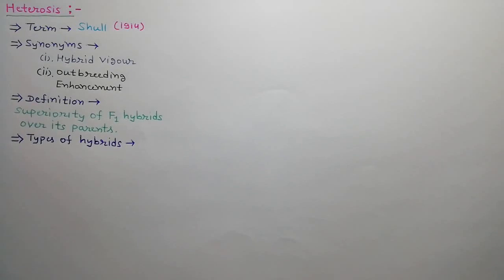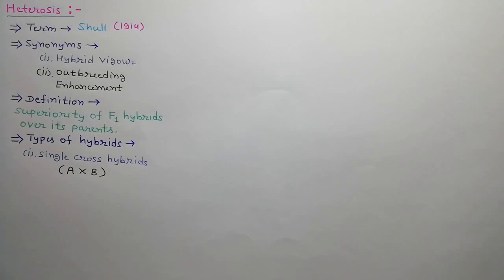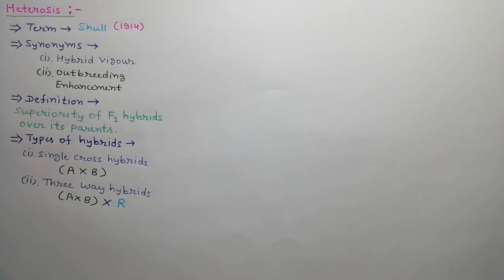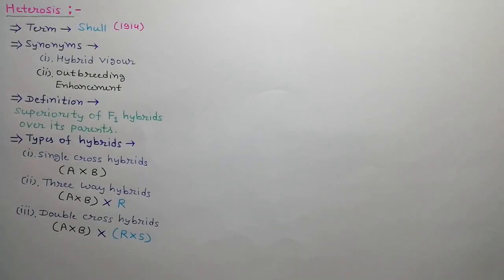There are three types of hybrids we can develop. Single cross hybrids or F1 hybrids, which means A cross B. Three-way hybrids, which means A cross B hybrid is crossed with R. Double cross hybrids, where two different F1 hybrids are crossed — meaning A cross B hybrid is crossed with R cross S hybrid.